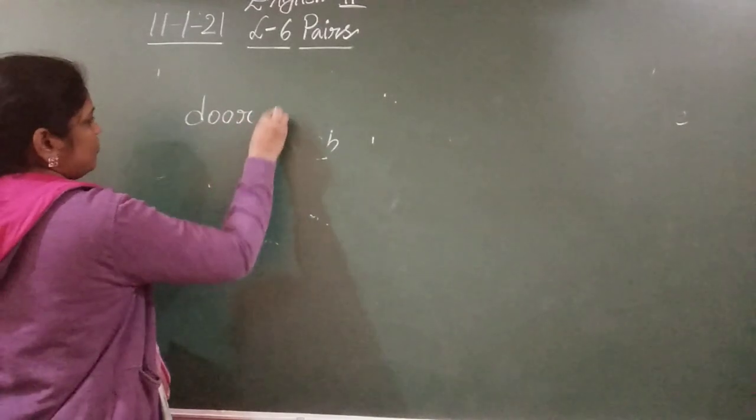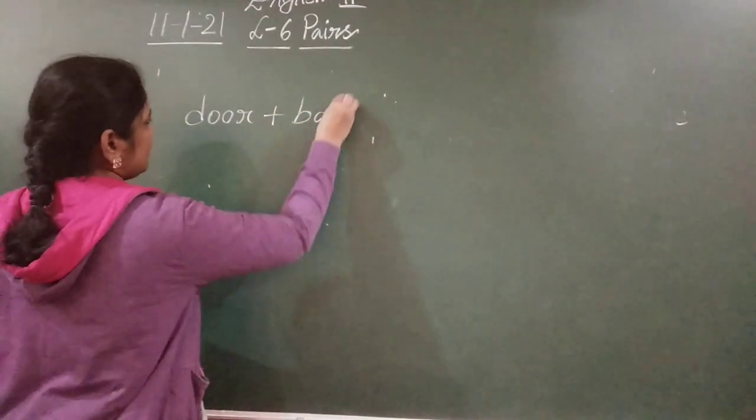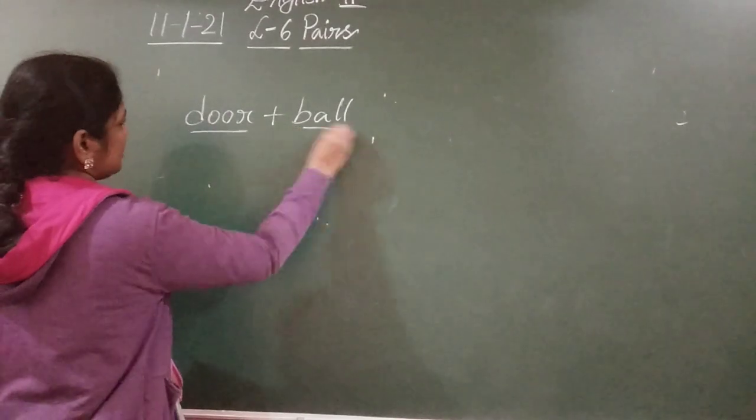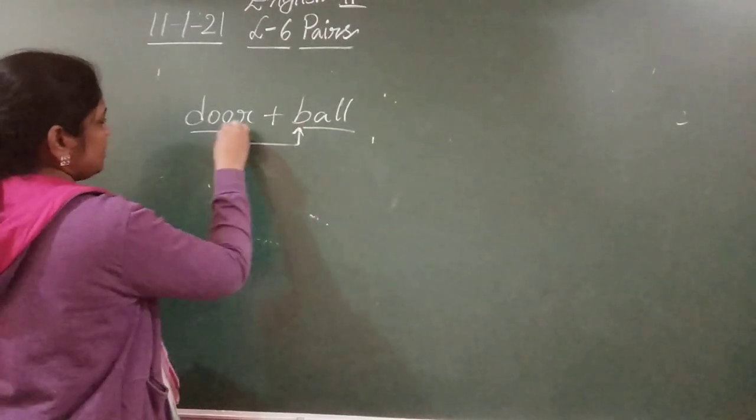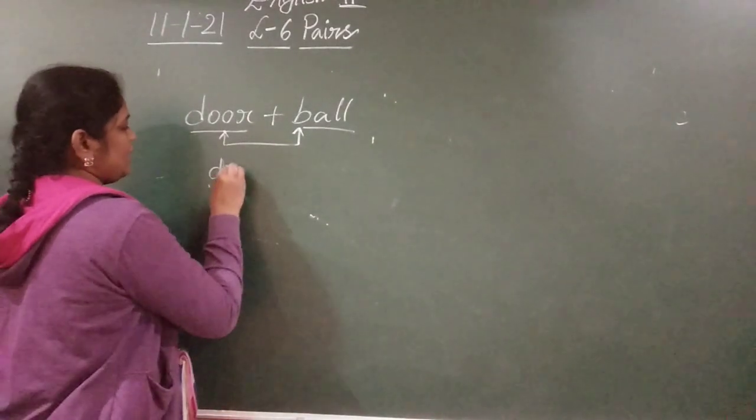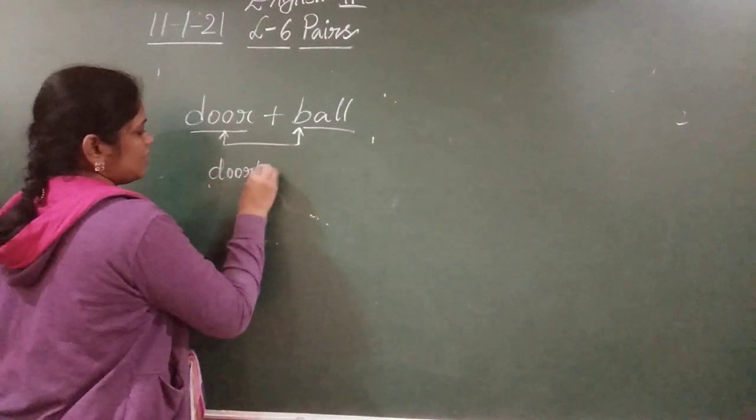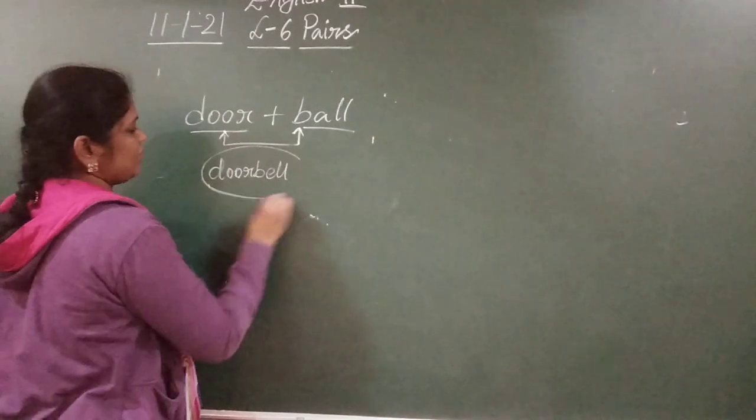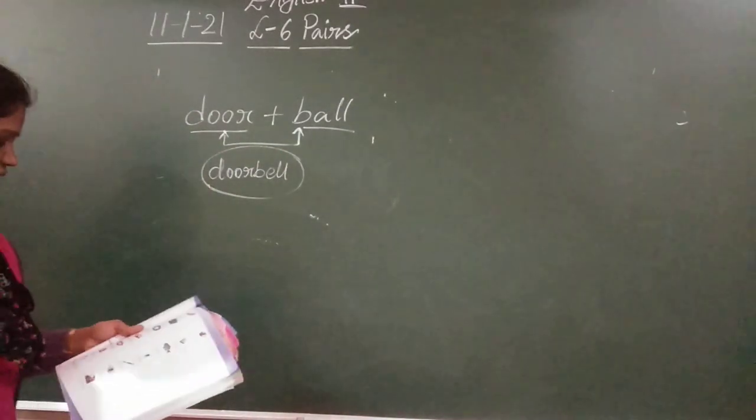Door plus ball. Here two naming words are there. You add these two naming words. Doorbell. One naming word you got. Yes or no?